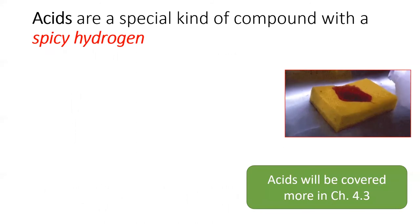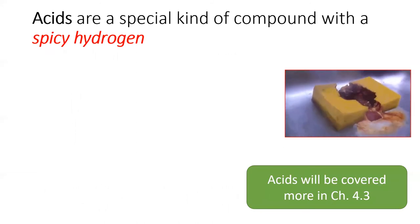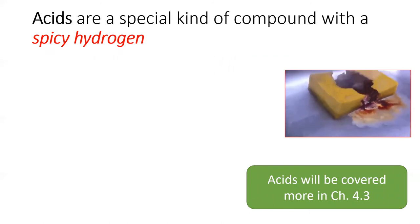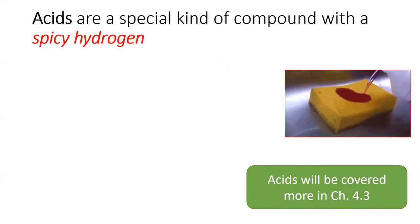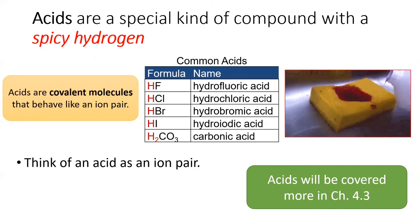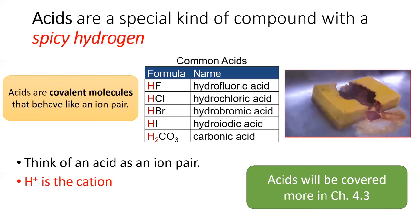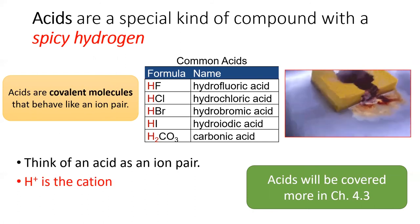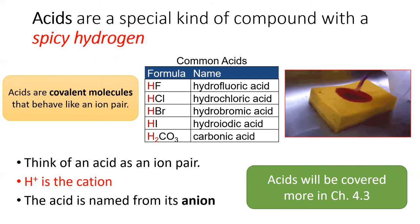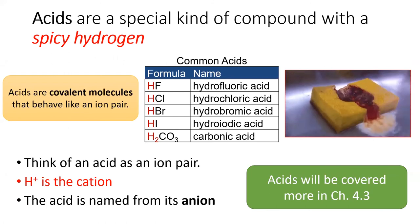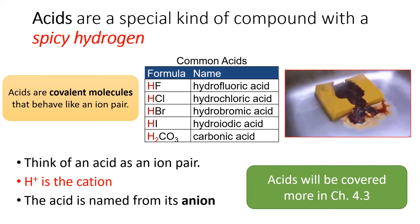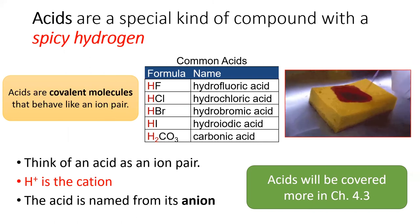Lastly, acids. Acids are a special compound — they have a very reactive hydrogen ion. Even though acids are made of molecules, they often behave like an ion pair. The spicy hydrogen atom is always the cation of the acid, and the acid gets its name from the anion. Therefore, in order to name acids, you need to know the names of common anions, especially the polyatomic ions.